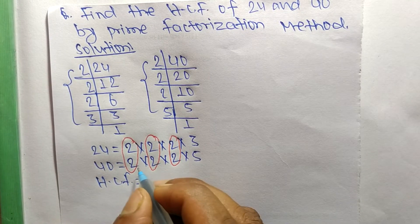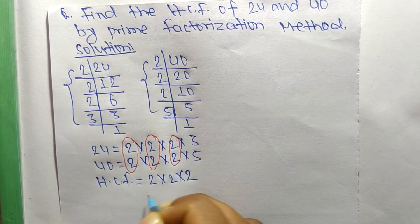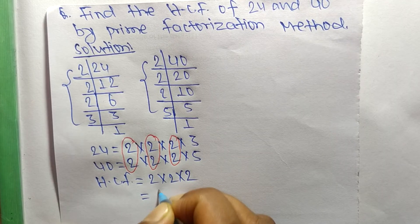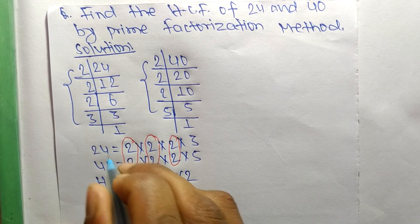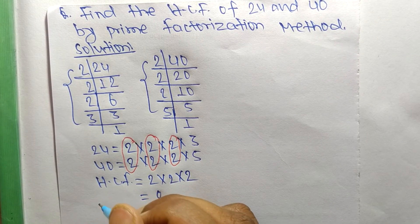That is 2, 2, and 2. So 2 times 2 means 4, and 4 times 2 means 8. So 8 is the HCF of 24 and 40. That's all for today, thanks for watching.